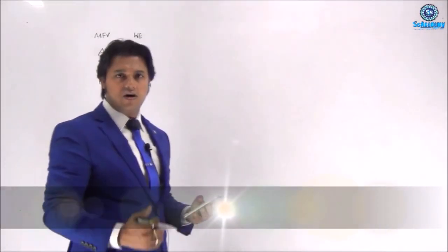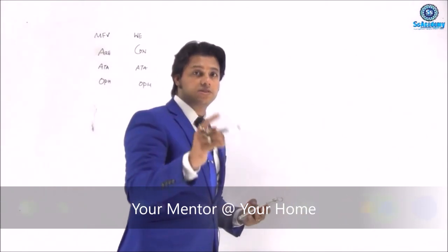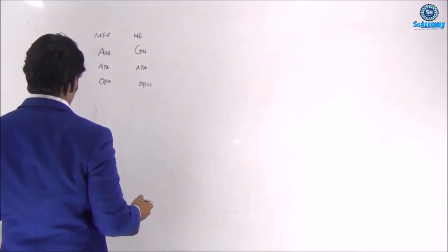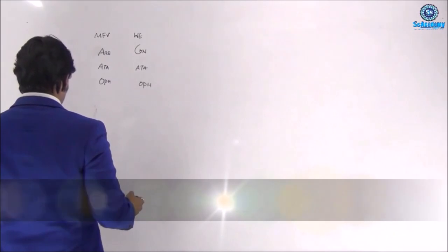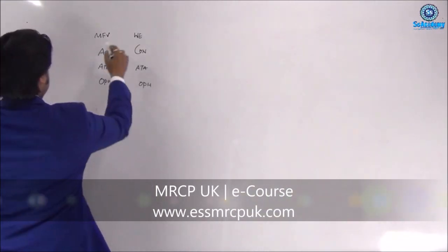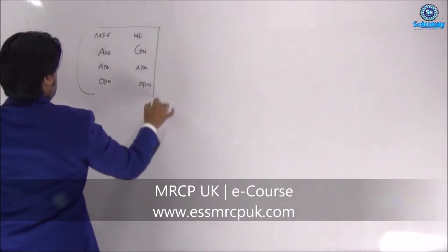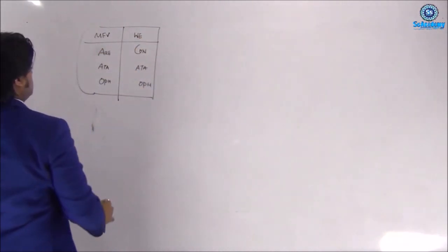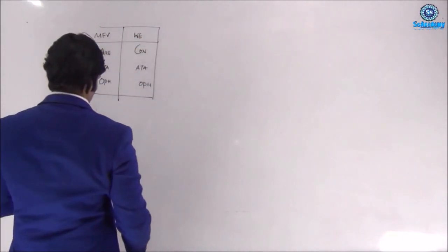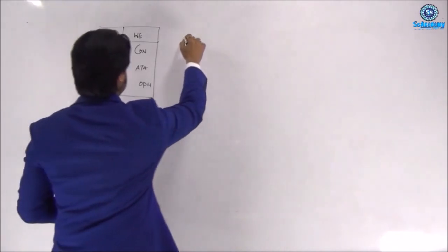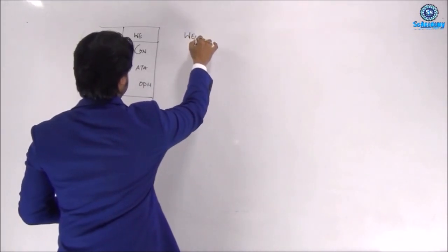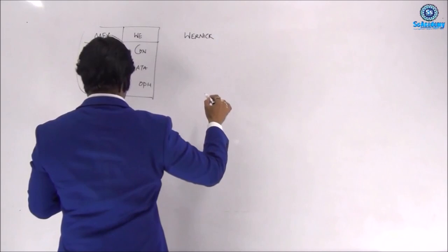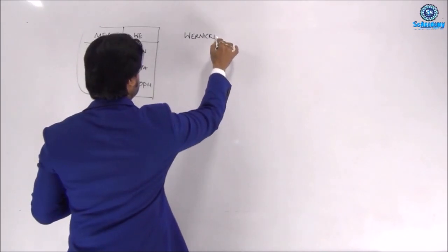The area of overlap — what I call the 'eta of' — is ataxia and ophthalmoplegia. These are common to both Wernicke's encephalopathy and Miller-Fisher variant. The 'con' stands for confusion, meaning encephalopathy is a confusional state — that's the key differentiator.